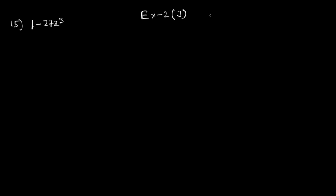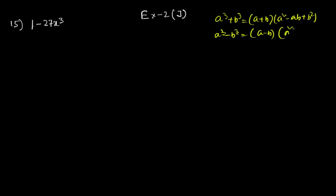As a revision, let me remind you the formulas we need. First: a³ + b³ = (a + b)(a² – ab + b²). Second: a³ – b³ = (a – b)(a² + ab + b²). These are the two formulas we need today.